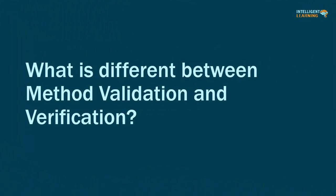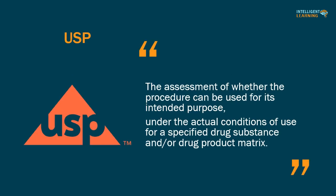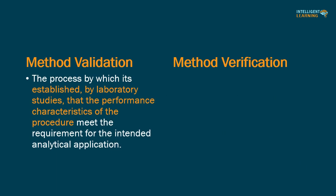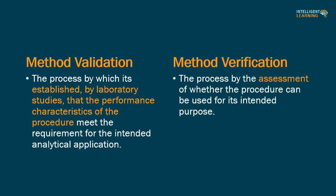What is the difference between method validation and verification? As per USP, verification is the process of assessment of whether the procedure can be used for its intended purpose under the actual conditions of use for a specified drug substance and/or drug product matrix. Method validation is the process by which it is established by laboratory studies that the performance characteristics of the procedure meet the requirements for the intended analytical application. In short, method validation is establishment, while method verification is assessment of whether an analytical method can be used for its intended purpose.